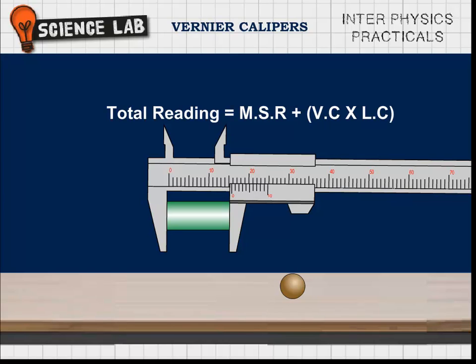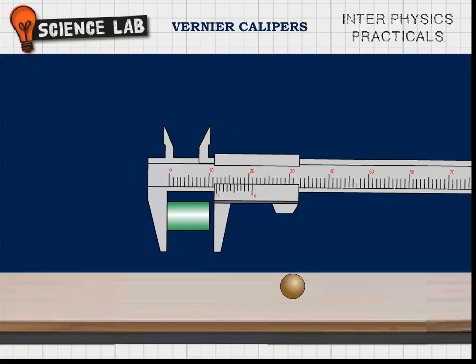Total reading is equal to MSR plus VC into LC. Keeping the cylinder lengthwise between the jaws in different positions, 4 or 5 readings are taken to get the mean length L of the cylinder.